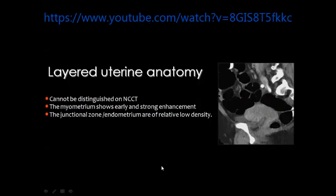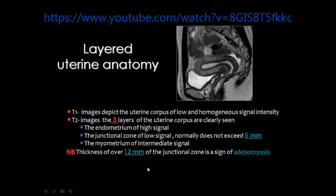If you have the sagittal reconstructed CT image of the uterus, you cannot see the zonal anatomy, but you can measure the uterine size, assess the contour, and evaluate the thickness of the myometrium and see masses coming from the body of the uterus. To appreciate the zonal anatomy — made of three layers — you need MRI in the T2-weighted image, preferably in the sagittal plane. Here you see the endometrial cavity, the junctional zone, and the myometrium of intermediate signal.